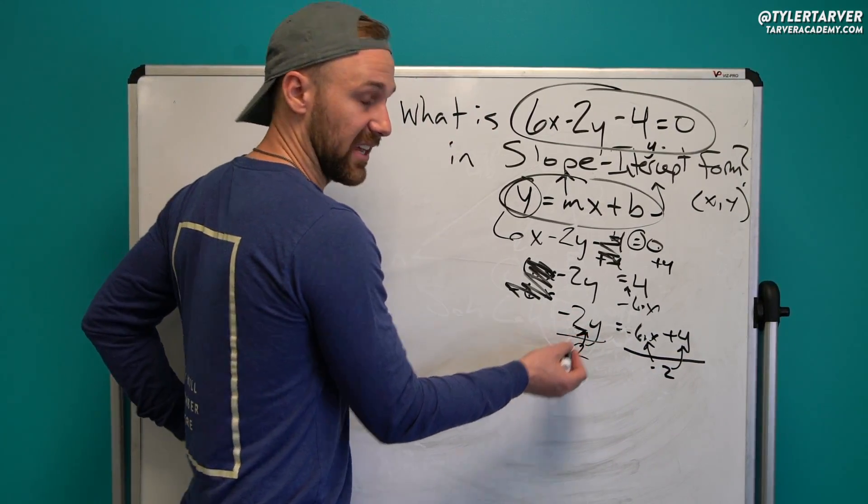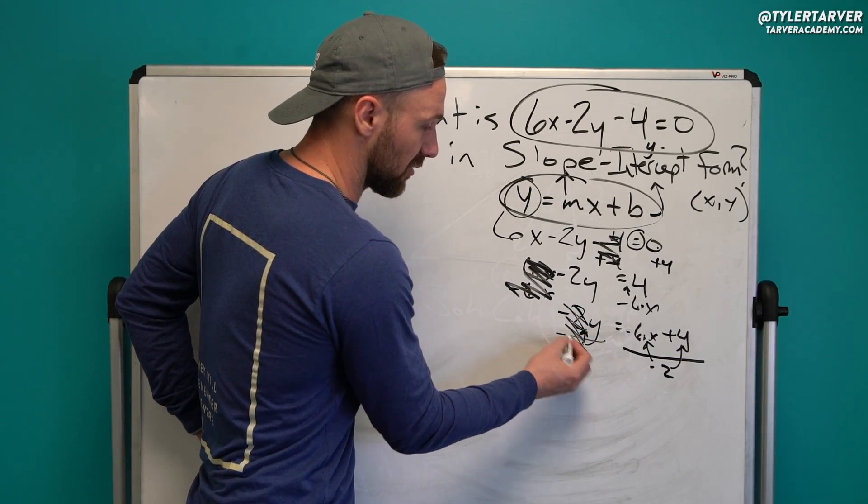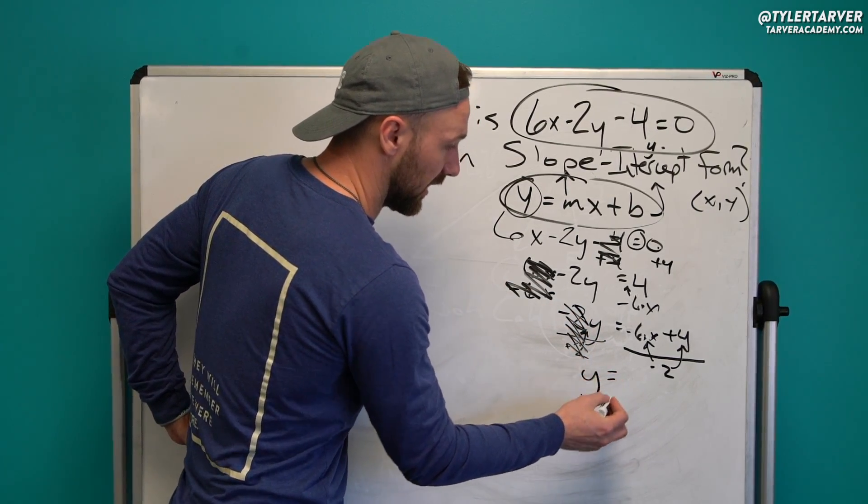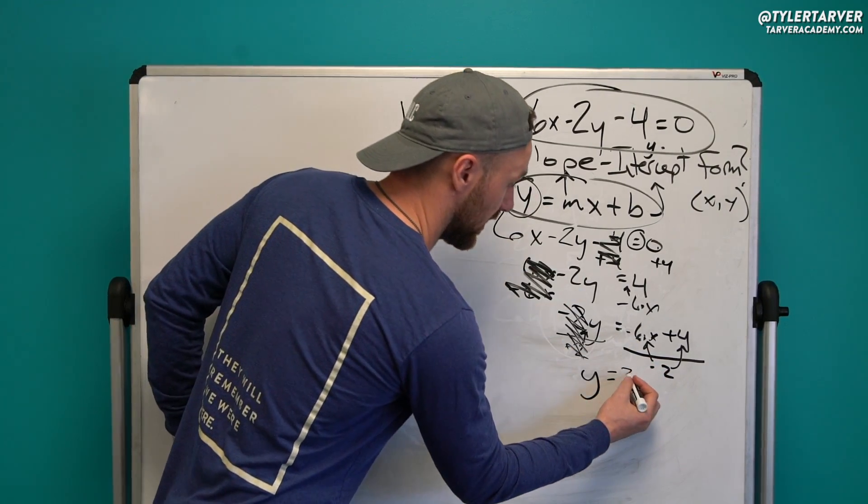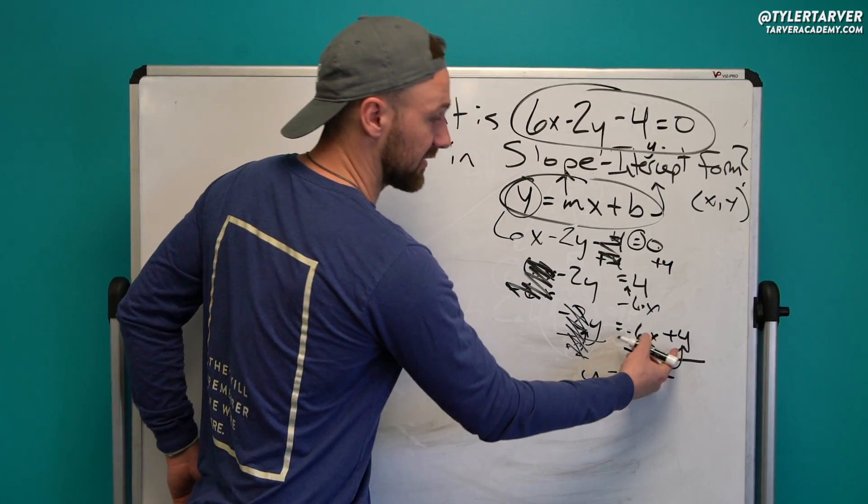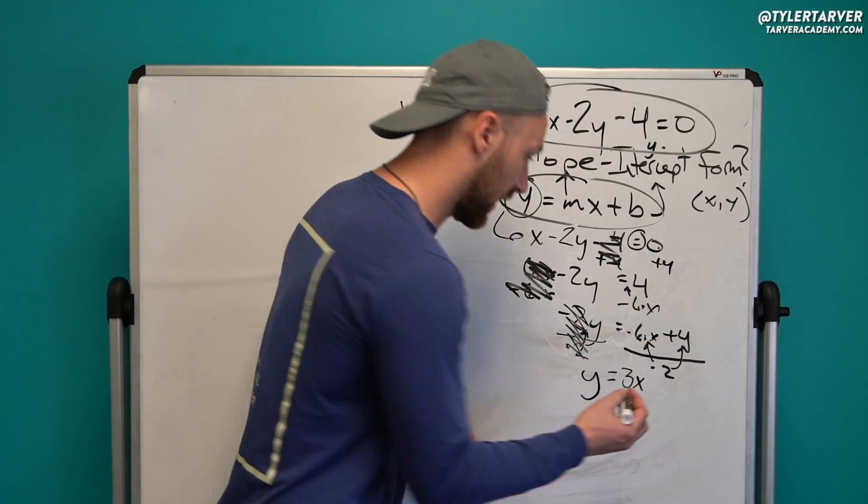So we've got y equals, and then I do negative 6 divided by negative 2, which is positive 3. x is still x. And then we do positive 4 divided by negative 2, which is negative 2. And ladies and gentlemen, you have just placed that equation in slope-intercept form.